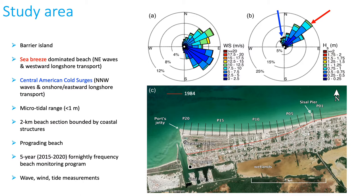Beach profiles have been conducted from May 2015 to March 2020 on a weekly and bi-weekly basis using an RTK GPS system along 20 cross-shore transects, extending seaward to approximately 1.5 meters depth. Shoreline, inner sandbar, and dune dynamics can be investigated with this dataset. Environmental conditions were also measured for the study period. Mean sea level has been recorded using a tide gauge installed inside the port, and waves with an ADCP at 10 meters water depth. Atmospheric conditions were measured with a meteorological station installed 10 meters above ground level.